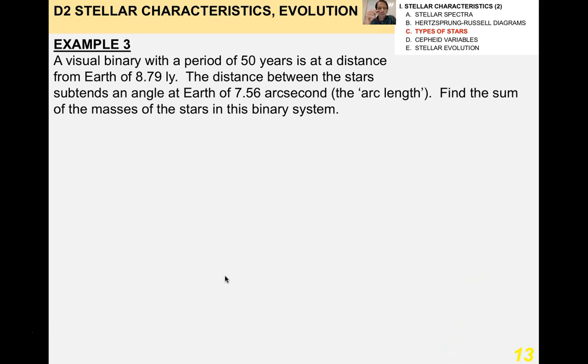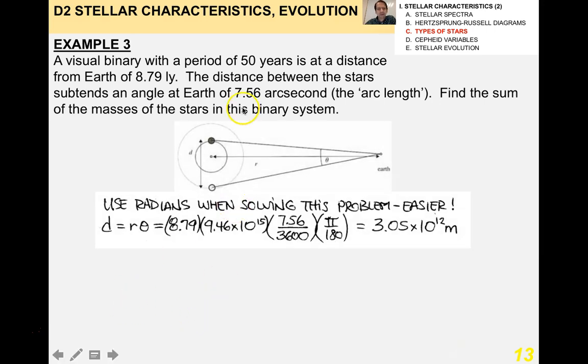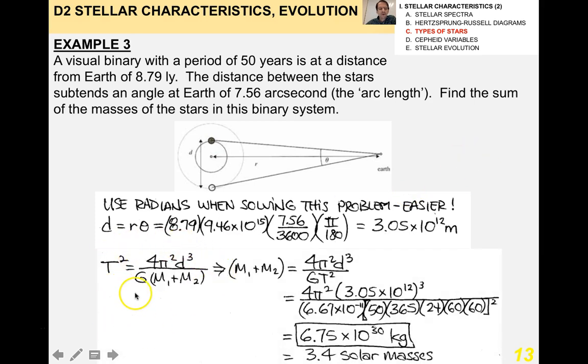We'll do a more detailed example coming up. As an example of a visual binary, if you consider it having a period of 50 years at a distance of 8.79 light years from Earth, distance between the stars subtends an angle at Earth of 7.56 arc seconds, find the sum of the masses of the stars in this binary system. You might want to pause the video and spend a couple of minutes doing this one before you see my solution. So, here's the situation here. Here's the arc length, subtending an arc length. These are the two stars, greatly exaggerated. You want to use radians when solving this problem. So, you get that D is 3.05 times 10 to the 12 meters. And then you just use that expression that I derived before for T for the period. The sum of the masses, so I'm solving for M1 plus M2, so I just rearrange it algebraically. And I get that the sum of the masses is about 3.4 solar masses. That's how you do it.